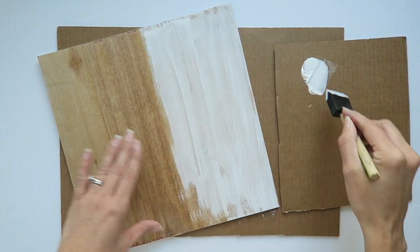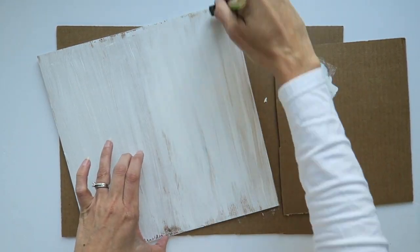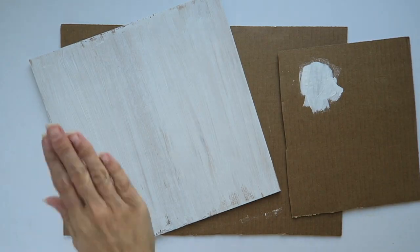If you would like full coverage, you might want to use two coats. If you want more of a rustic look, you might want to paint it with a dry brush so that you can see the wood grain through it.